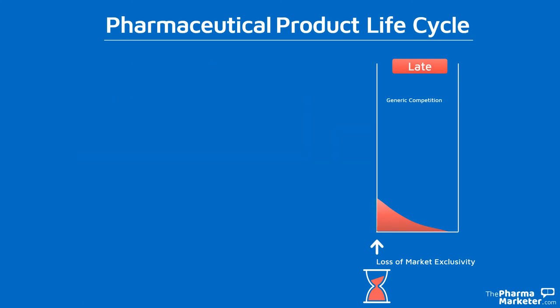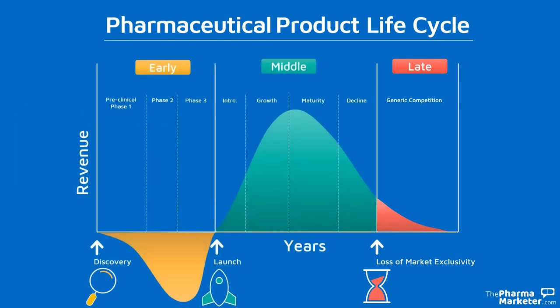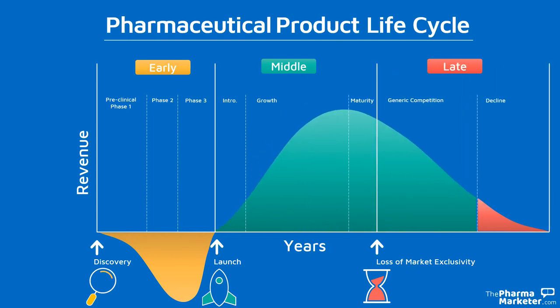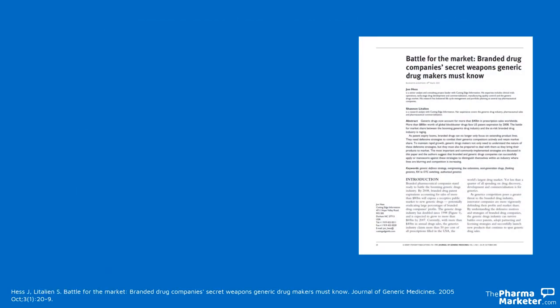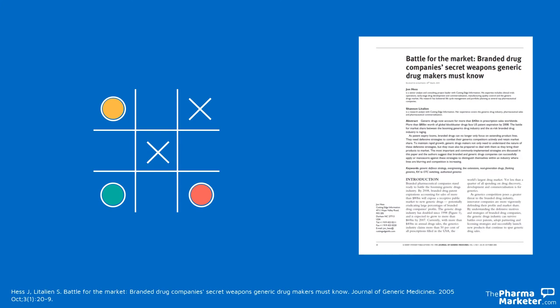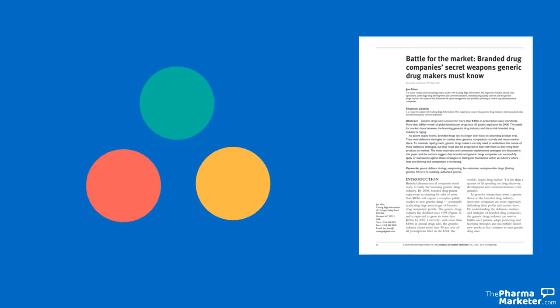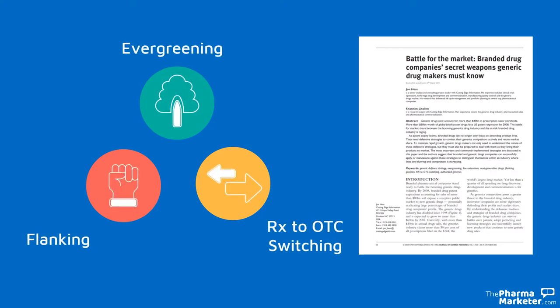When the patent expires, companies seek offensive strategies to combat generic competitors and retain market share. The ultimate objective of any company is to extend the life cycle over a longer period of time. A paper published in the Journal of Generic Medicine explored the branded drug company's strategies to overcome generic competition. These strategies are: evergreening, flanking, and Rx to OTC switching.